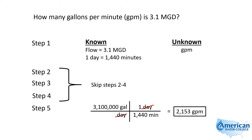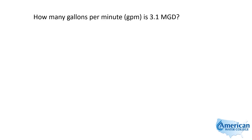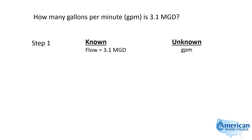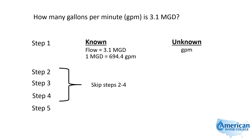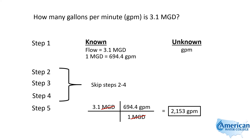So I take three million, one hundred thousand and divide by 1440, which gives me 2,153 gallons per minute. For the same problem using the 694.4 equivalent: 1 MGD equals 694.4 GPM. You'd enter it as 3.1 MGD times 694.4 GPM per MGD — the MGD cancels out — and we get 2,153 gallons per minute. It's the same either way.